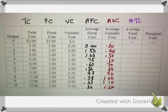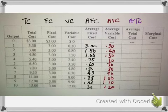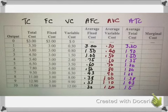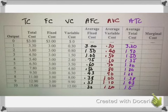For average total cost, we see that it's the sum of the average fixed and the average variable. So $3 plus $0.30 gives us $3.30, or we can take the total cost and divide it by the number of units — 1 — and it's $3.30. Average total cost starts high, gets smaller and smaller, hits a minimum point at $1.30, and then starts to increase again. That has a lot to do with what is known as efficient scale — for a given factory there is a magic level of output that minimizes the average total cost where you're operating at your most efficient size. You can produce more units, but it's going to cost more on a per unit basis.